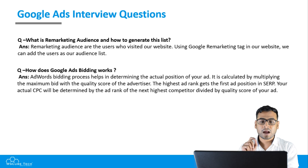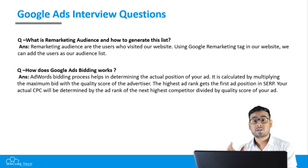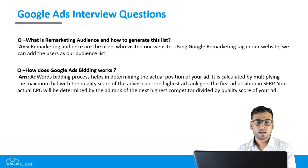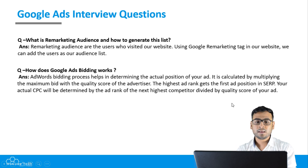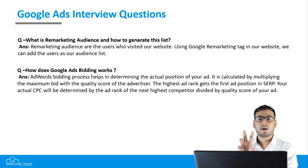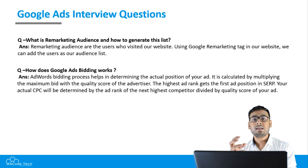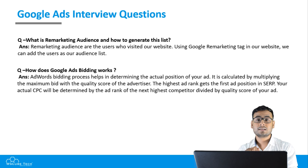The next question is: how does Google Ads bidding work? This is an interesting question that builds on what we've covered. The bidding process helps determine the actual position of your ad. It is calculated by multiplying the maximum bid with the quality score of the advertiser. For example, if your maximum bid is 5 rupees and your quality score is 6, your overall ad rank score is 30.